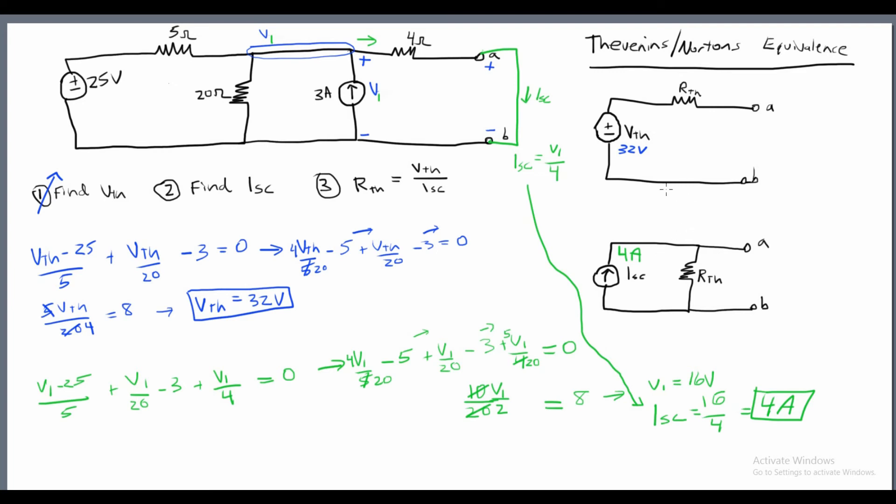So now we just found our Norton's current or our short circuit current. It's kind of a slang term that people call it because of what you have to do to get it. You have to close the circuit. Okay, so now we've solved for VTH, ISC, and all we have left is RTH, right? Well, simply enough, step 3 is going to be just simple division. So it honestly couldn't be easier. So RTH is going to be 32 divided by 4, which is 8. So RTH is equal to 8 ohms here and here.